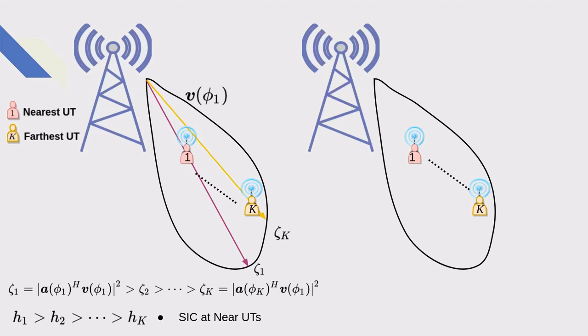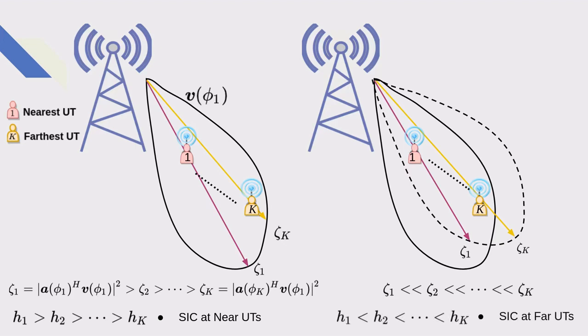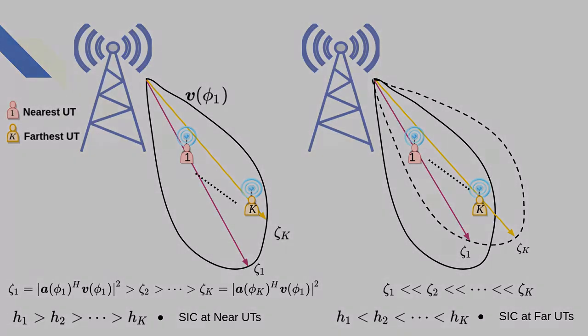In the presence of mutual coupling without compensation, the beam is distorted and the array gains are reversed in the worst case scenario. This causes the effective channel gains of the near users smaller than those of the far users, therefore SIC should be applied at the far users. However, because of the unawareness of mutual coupling at the base station, SIC cannot be performed at the correct users, resulting in a sum rate reduction.